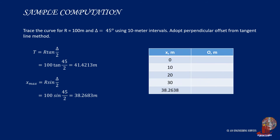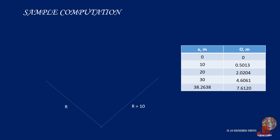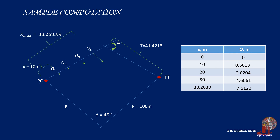Next, compute the offsets through intervals of 10 meters. Using a table of X from 0 to the maximum 38.2638, apply the formula previously derived to determine the offset lengths, which turn out as: 0 for X = 0, 0.5013 meters for a 10 meter interval, 2.0204 meters for a 20 meter interval, 4.6061 meters for 30 meters, and 7.6120 meters for the maximum interval of 38.2638 meters. Such offsets will be measured as per the values of O sub k determined from the computation.